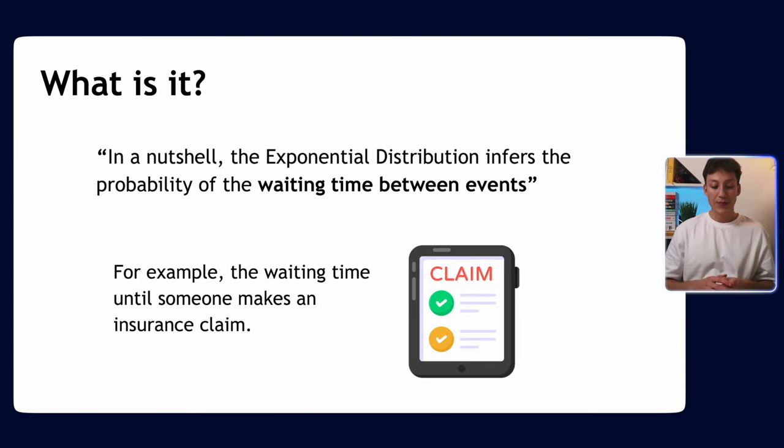A basic example would be the waiting time until someone makes a claim. You can see why it's very useful for insurance companies—if they can know how long it takes for a customer to make a claim, they know how much premium they're making, so they can better price a policy. The exponential distribution plays a critical factor in this big multi-glomerate industry.